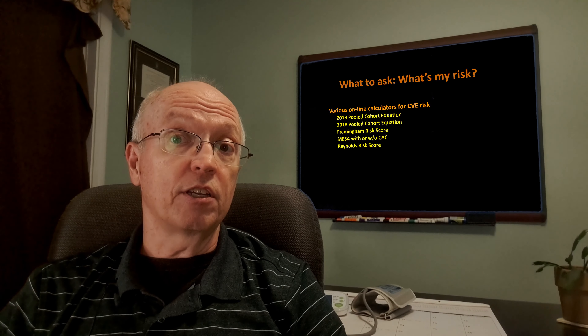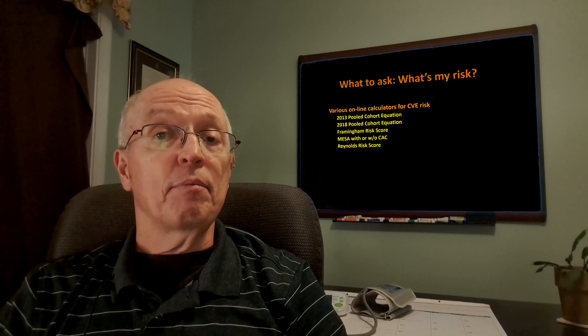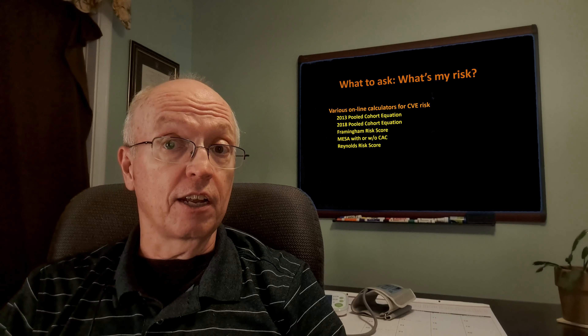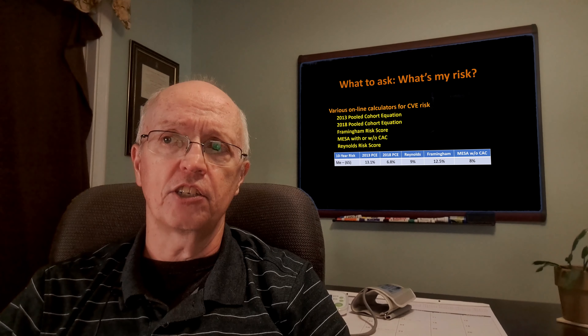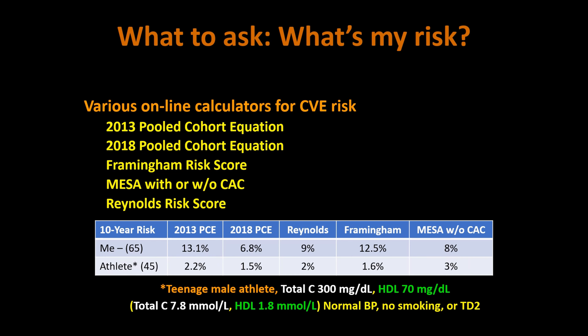In studies I've read, the most accurate calculator is the 2018 Pooled Cohort Equation, and the least accurate is the 2013 version. Interestingly, the most accurate gives the lowest number and the least accurate gives the highest. I go with the 2018 PCE until I get a CAC score — not just because it gives the lowest number, but because studies show it's the most accurate. I plugged in my own numbers as an example; I'm age 65 and I'm going with a 6.8% 10-year cardiovascular risk, which I think is manageable.